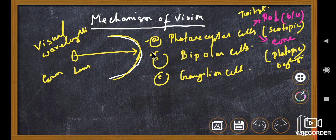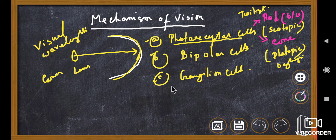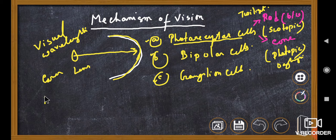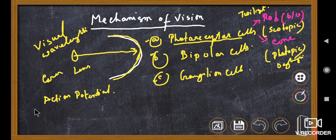So the retina has three cell layers. The photoreceptor cells are of two types: rod cells and cone cells. When light of a particular visual wavelength is focused onto the retina, the membrane potential in the photoreceptor cells changes, and as a result an action potential is generated in the rod and cone cells of the retina.